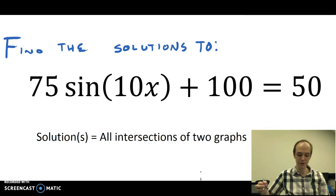Today we're going to talk about finding the solutions to the equation 75 sine of 10x plus 100 equals 50. I've chosen this equation because it's the type of equation you might see in the middle of a trig word problem. There's no word problem here, just the equation, but this is the kind of thing that you're going to have to solve in order to get any farther in the word problem.